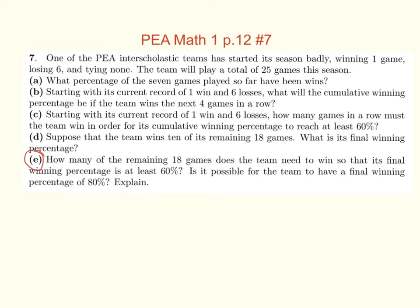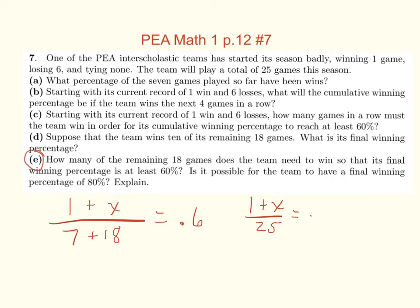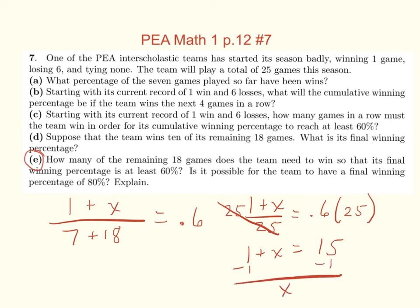I'm going to give you a little heads up here. We're going to play a total of 25 games. I want to figure out how many wins I need, so I'll put an X there. What do I want that to equal? 0.6. That would be 1 plus X over 25 equals 0.6. How can I solve that? You would multiply both sides by 25. Perfect — 1 plus X equals 15. Subtract 1 from both sides. X equals 14. So they need to win 14 out of 18 to reach 60 percent.